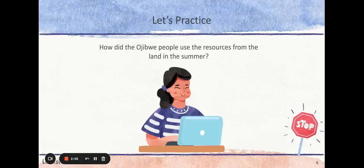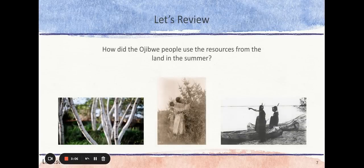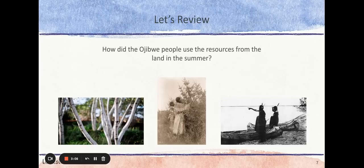Pause this video to record your answers on your handout at the first stop sign, then hit play when you are ready to continue. The Ojibwe used the land in many different ways during the summer. Some ideas include fishing, hunting, gathering berries, collecting birch bark, and growing crops.